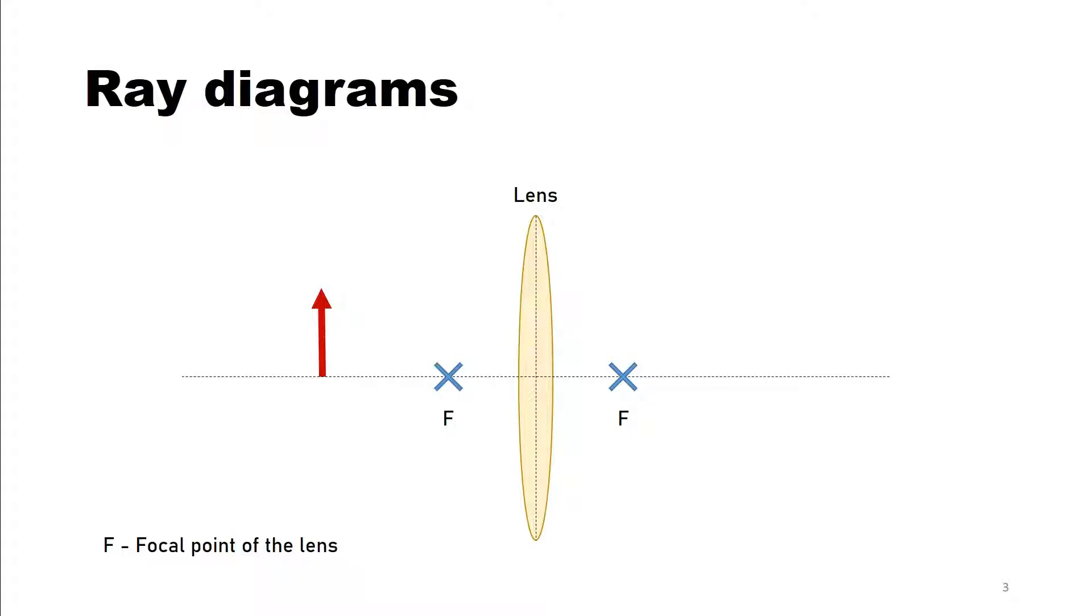The first thing we do is we choose a point of which you want to know where it is in the resulting image. And in this case it makes sense to choose the tip of the arrow.